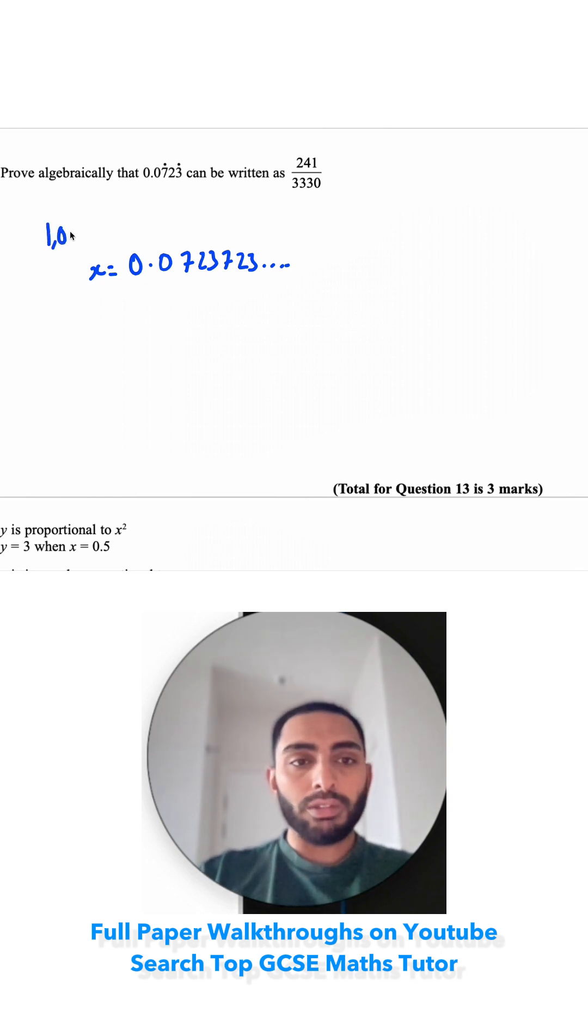It's 3, so multiply by 1000. So 1000x, I need to move this three places: 1, 2, 3. The decimal point is going to be between the 2 and the 3. So I've got 72.3723723, and you can see that these line up with each other.